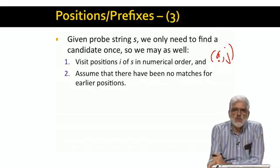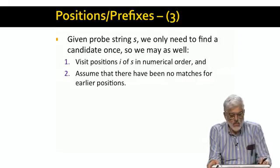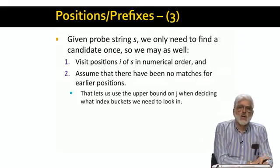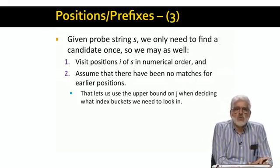If this assumption is wrong, then T is already a candidate. So we don't need to worry about missing T for this value of position I. That assumption lets us use the upper bound on J that we derived two slides previous.